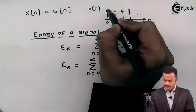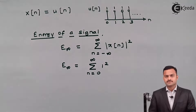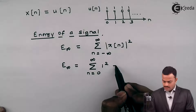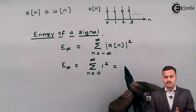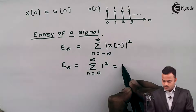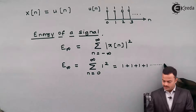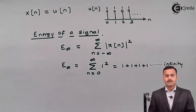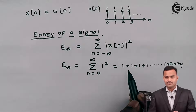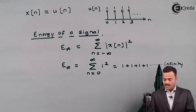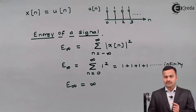Since the signal is u(n), for every value of n the x(n) is 1, so it is 1². The number is independent of n — for any value of n the signal has value 1. So I have 1 + 1 + 1 + 1 + ... up to infinity, meaning I have to add 1 an infinite number of times. Every addition keeps increasing: 1, then 2, then 3, up to infinity. So E∞ equals infinity.